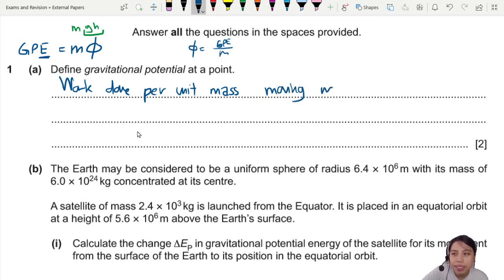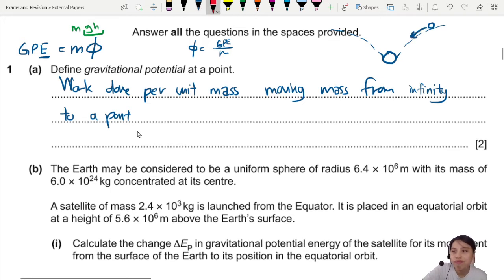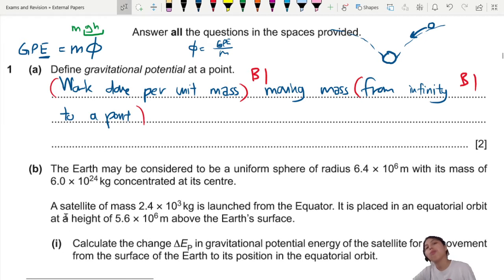And this is work done per unit mass moving a mass from very far away, from infinity, infinity far away, to a point closer. Think of it this way lah. If you are very heavy mass, you are like a potential well. Anybody that come close to you will roll and be attracted to you. Test mass, satellites. Anyway, this is work done per unit mass. One idea. That is B1.